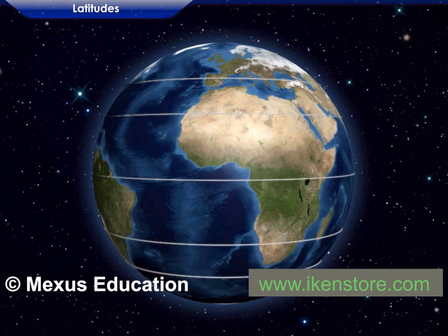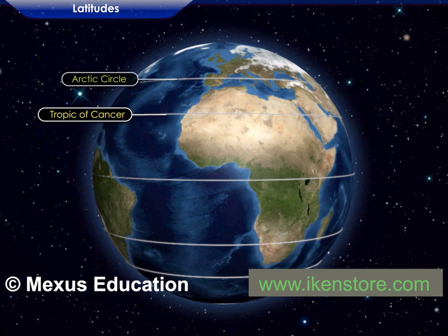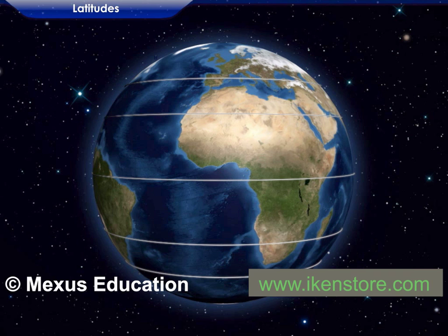Other main latitudes towards the north are the Tropic of Cancer and the Arctic Circle. Towards the south we have the Tropic of Capricorn and the Antarctic Circle.